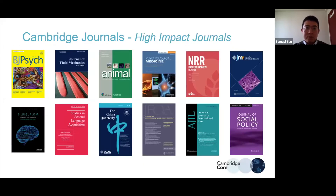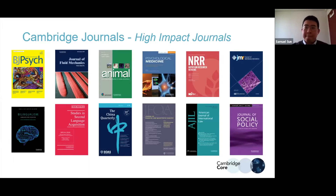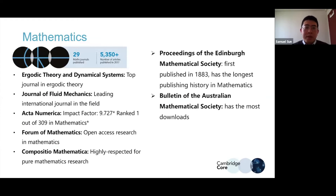Here are some journals with very high impact factors, including the China Quarterly — this is very popular in Asia because it focuses on politics, history, and many aspects of the study of China. In mathematics, we currently publish 29 journals, and Acta Numerica is the top-ranked journal in mathematics.